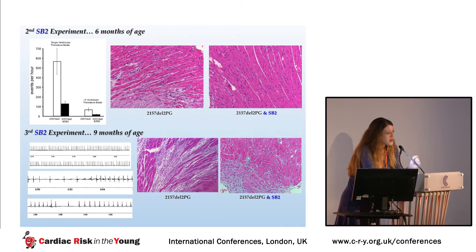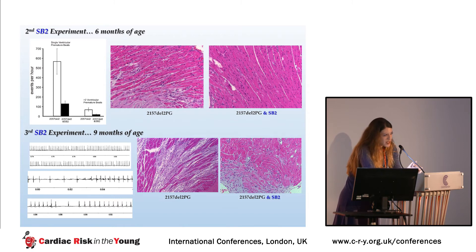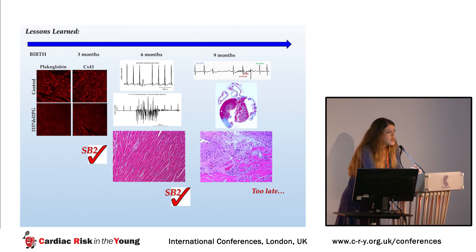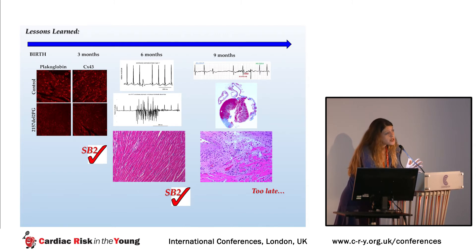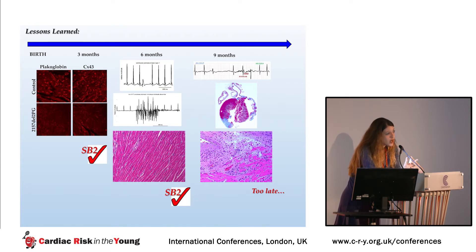If you start treatment a little later, at nine months of age, you cannot stop the arrhythmias. And although you can prevent the lesions from growing any further, you cannot reverse the damage that is already done. Collectively, what we learned is that protein redistribution precedes and likely promotes arrhythmogenesis. At the early stage, SB2 can stop both the arrhythmia and the myocardial injury phenotypes. But at a later stage, after the heart has been significantly remodeled, it is essentially too late — arrhythmias are mostly dependent on anatomic substrates.